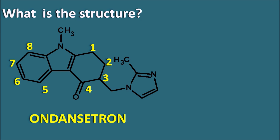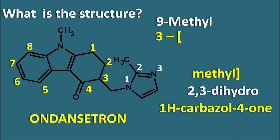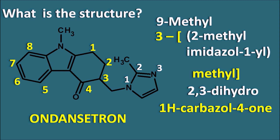Positions 1, 2, and 3 are saturated, so the first position is indicated as 1H and the second and third positions as 2,3-dihydro. This gives the ring system name: 2,3-dihydro-1H-carbazol-4-one. Looking at the side chains: the 9th position has a methyl group on the nitrogen, and the 3rd position has a methyl group attached to an imidazole ring system. Numbering the imidazole as 1-2-3, this is written as 3-methyl with a 2-methylimidazol-1-yl group. Therefore, the full name of Ondansetron is based on the 2,3-dihydro-1H-carbazol-4-one ring system with a methyl group at position 9 and a (2-methylimidazol-1-yl)methyl group at position 3.